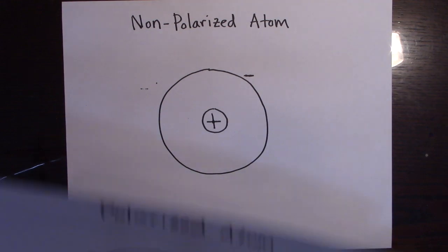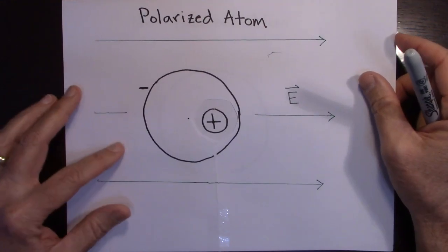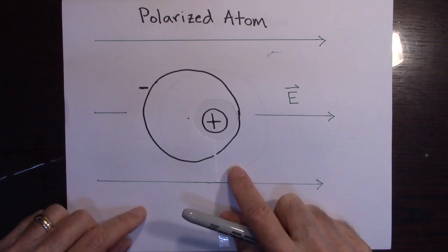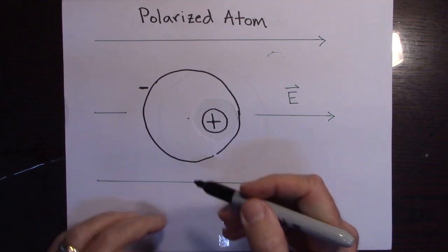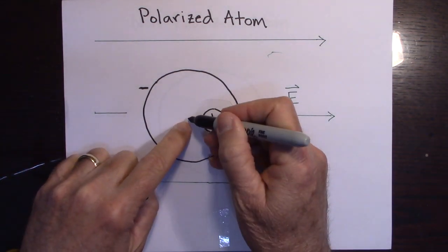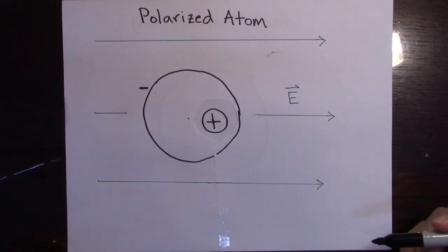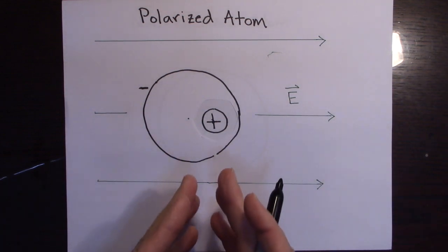And if we put a field in here, then what happens is it shifts the electron cloud. And so we say that the atom is polarized because the center of the negative charge is here, whereas the center of the positive charge is there. So no longer do the positives and negatives share the same center.